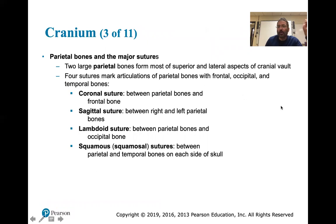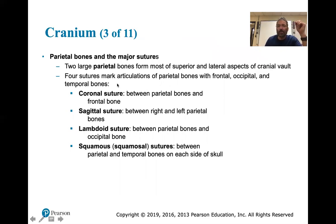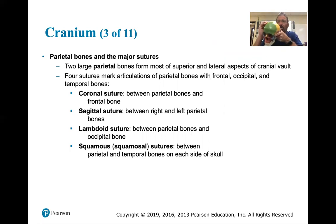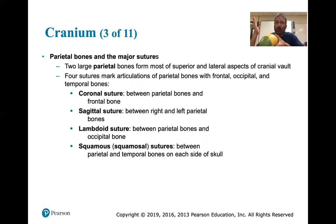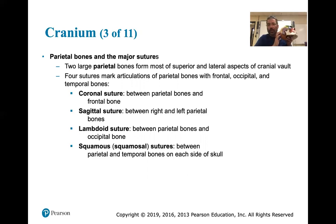The two parietal bones form most of the superior and lateral aspects of the cranial vault. There are four sutures connecting to the frontal, occipital, and temporal bones. These are the saw-like structures where the bones come together: the coronal suture, sagittal suture (between right and left parietal bones), lambdoidal suture (named for the Greek letter lambda, between parietal and occipital bones), and squamous sutures between the parietal and temporal bones on each side.